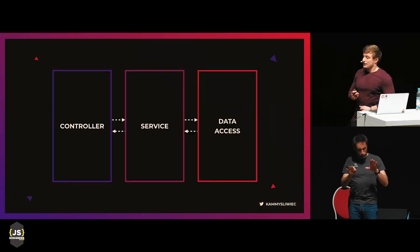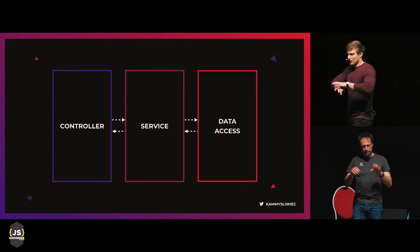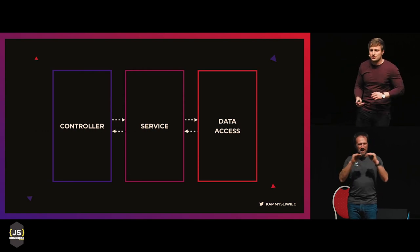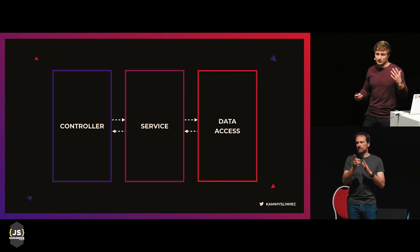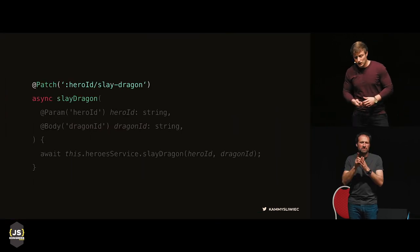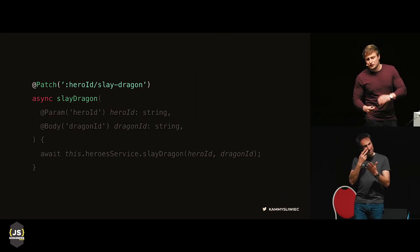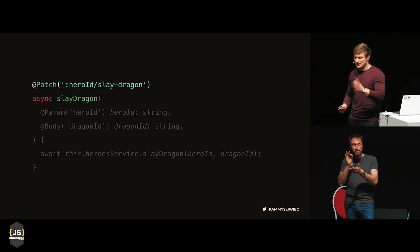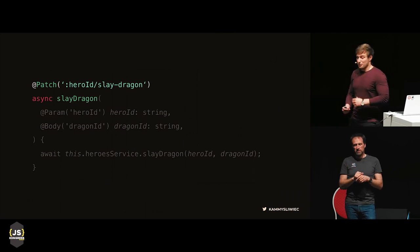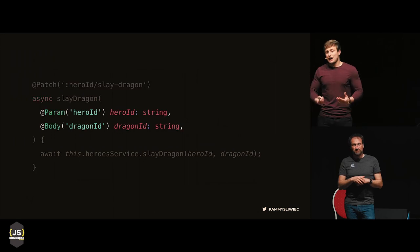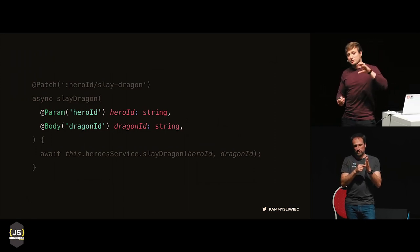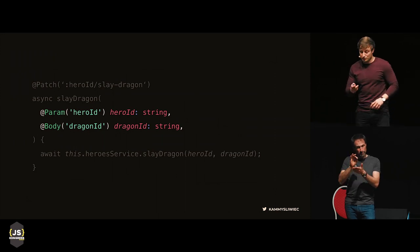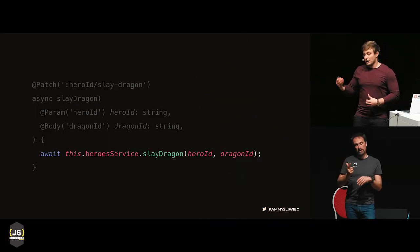The layered architecture: we have a controller, which is our transport layer that takes requests and responds to users. We have a service layer, which holds all business functionality, and a data access abstraction over our database or event log. In Nest, you create endpoints declaratively using decorators like patch, post, get on the methods. You use decorators to extract input variables — here, param to get the hero ID from the endpoint, and dragon ID from the request body — then execute the corresponding method in the service layer.